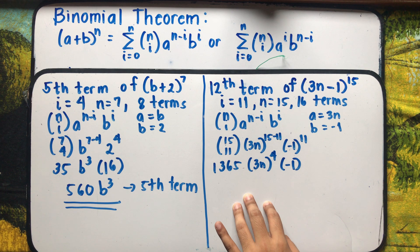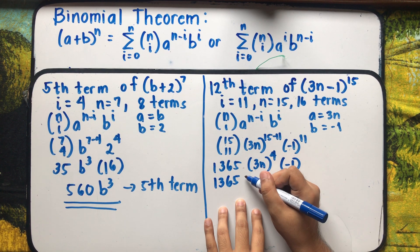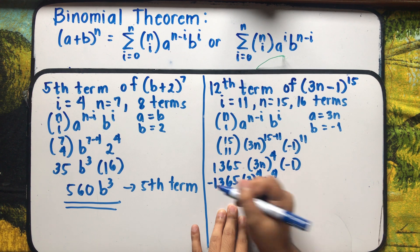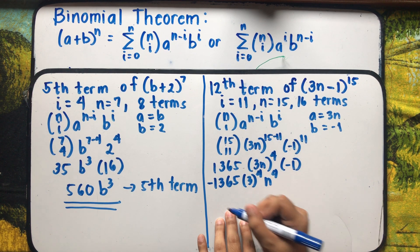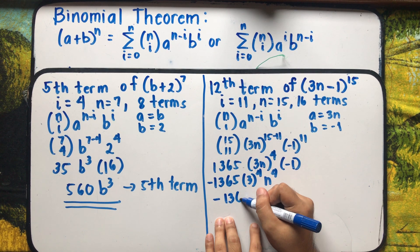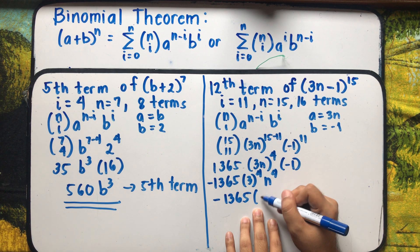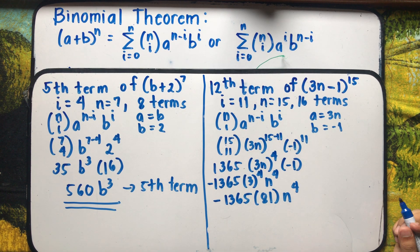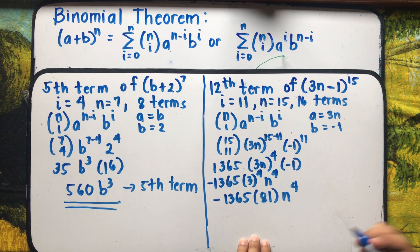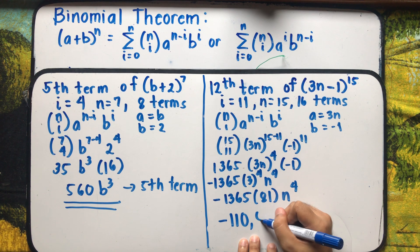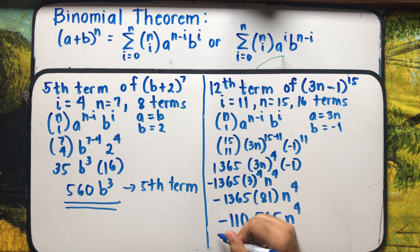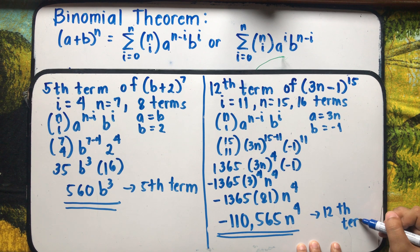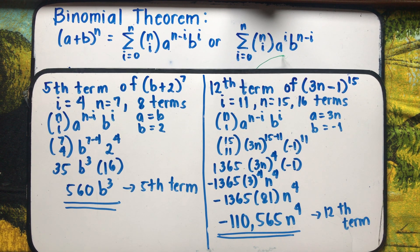Simplifying: 1,365 times 3 raised to 4 times n raised to 4, multiplied by negative 1, gives negative 1,365. Then 3 raised to 4 is 81. Negative 1,365 times 81 equals negative 110,565. Therefore the 12th term of (3n - 1)^15 is negative 110,565n⁴.